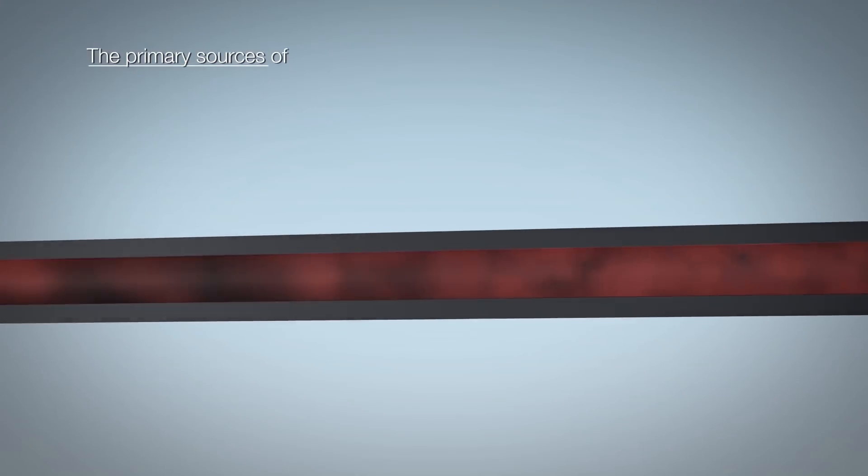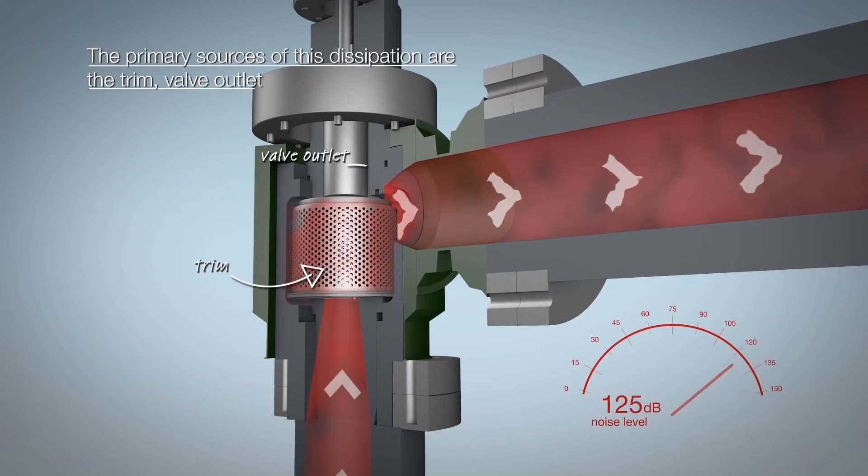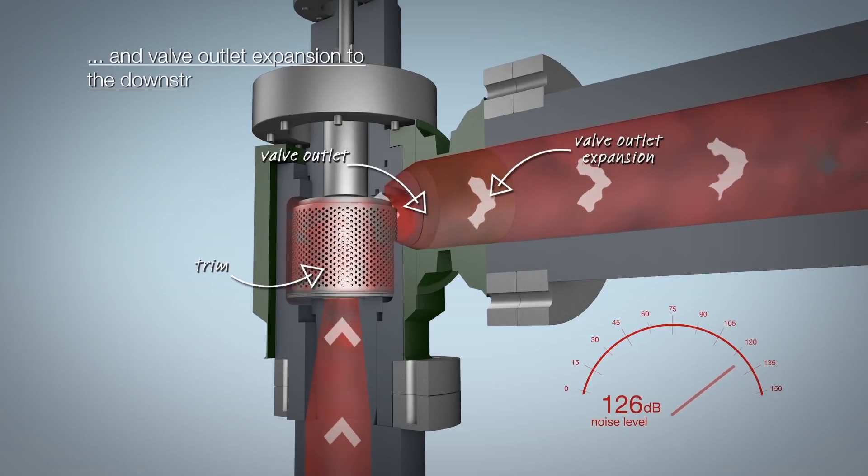The primary sources of this dissipation are the trim, valve outlet and valve outlet expansion to the downstream piping.